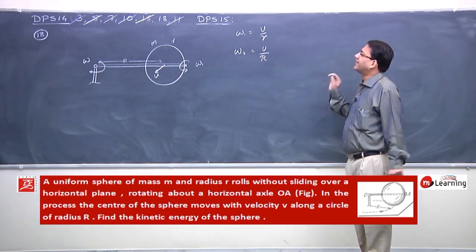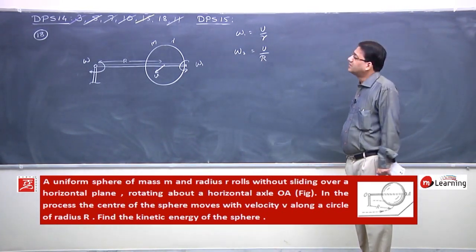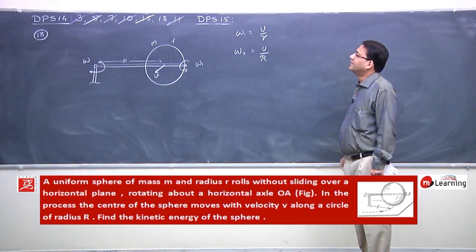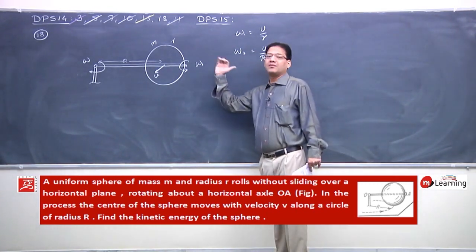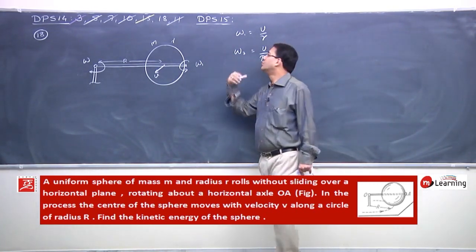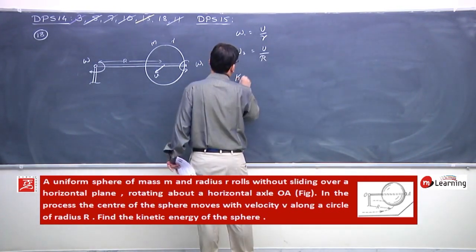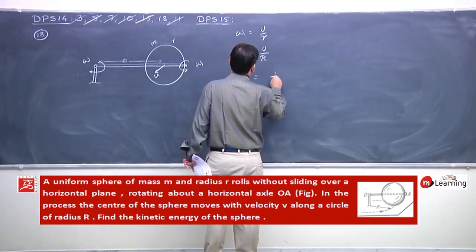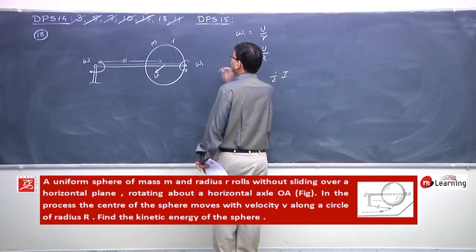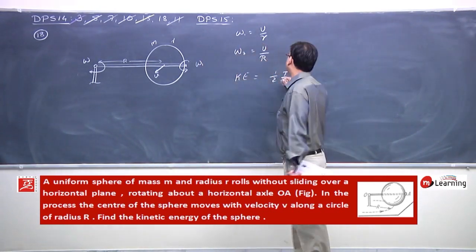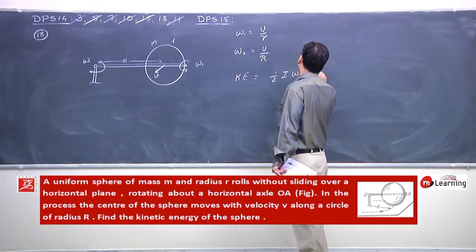Ab sphere's kinetic energy poochhi. Hum kya karte hai? Ek to is axis ke about rotation hai, uski wajah se kinetic energy hogi half I, moment of inertia about diametric axis, omega 1 square.